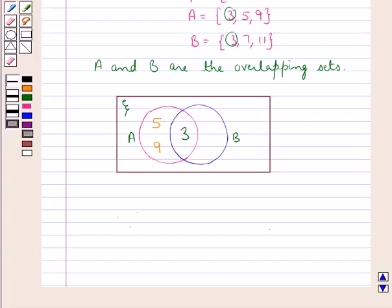Then we write the remaining elements that is 7 and 11 of the set B in the portion of the set B that is not common to set A. We would write 7 and 11.